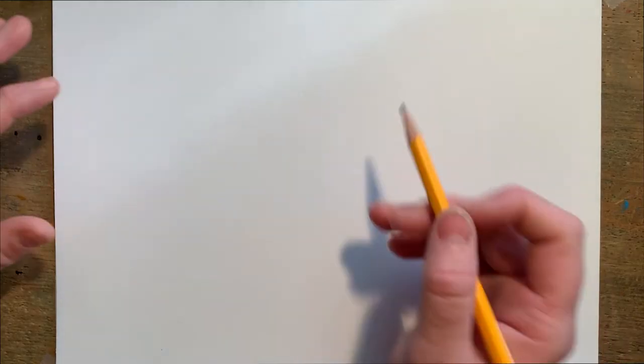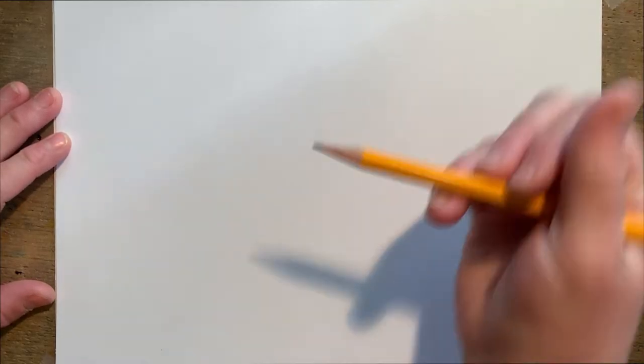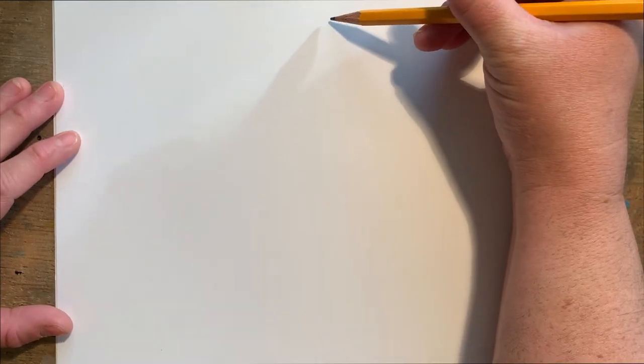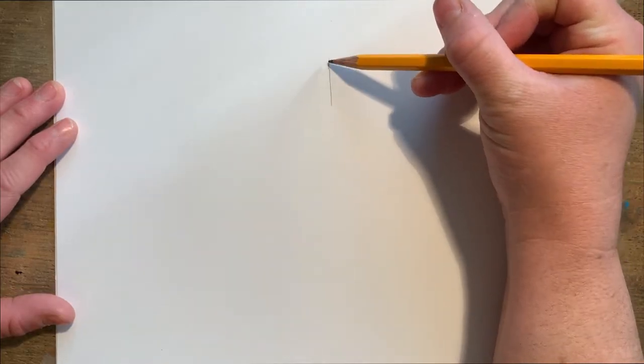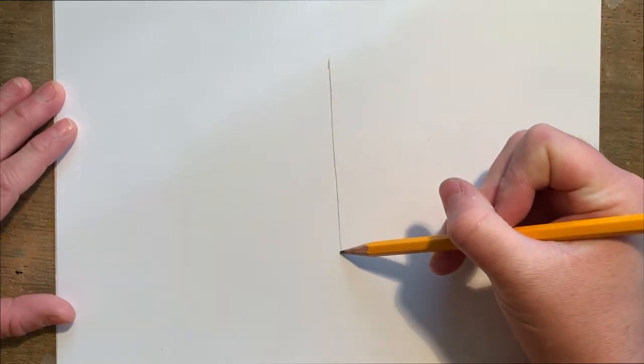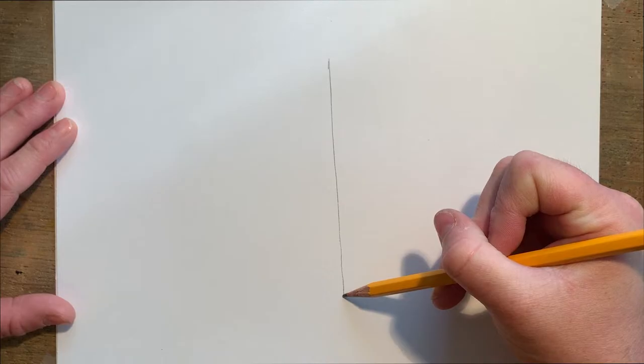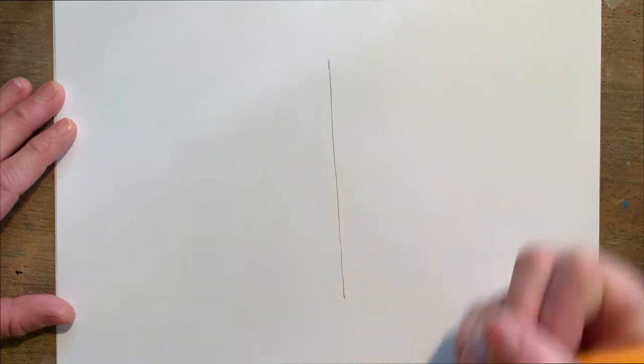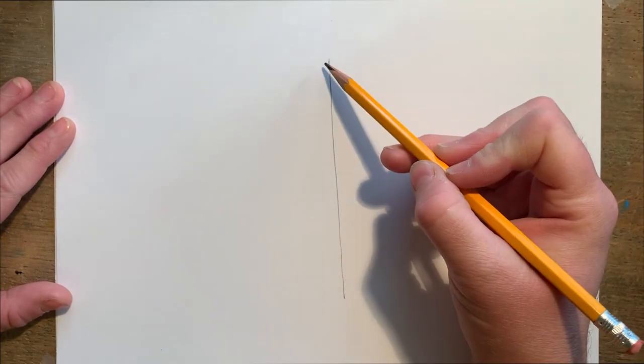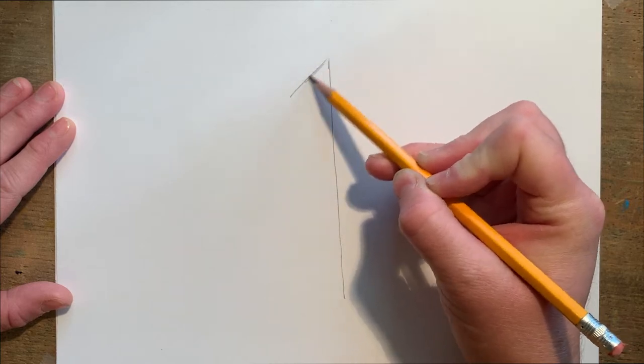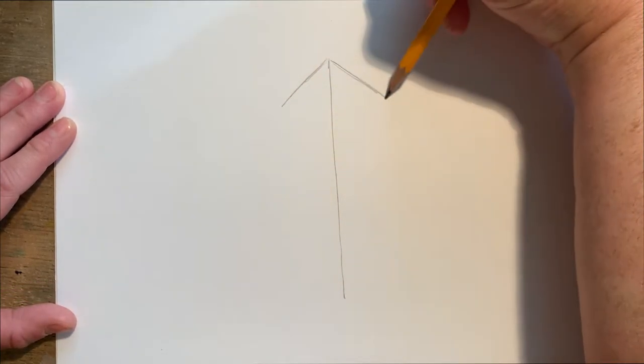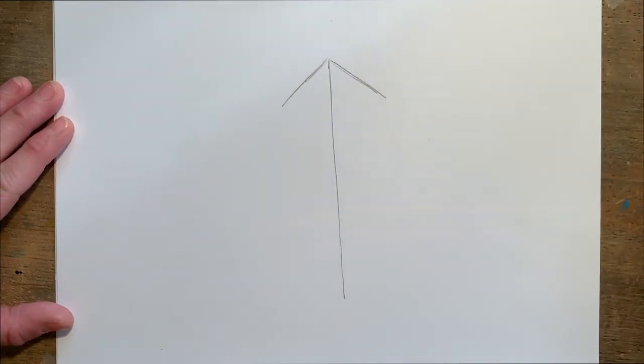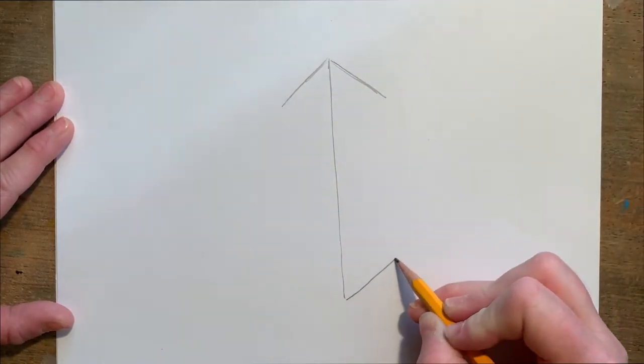Hey guys, today we are going to be drawing some 3D gems and jewels starting with a ruby. We are going to be drawing a guideline down the center, so keep it light. This is going to be a vertical line in the center of our gem. At the top we are going to draw two short diagonal lines pointed like an arrow, and we're going to do the same thing at the bottom but like an arrow pointing down.